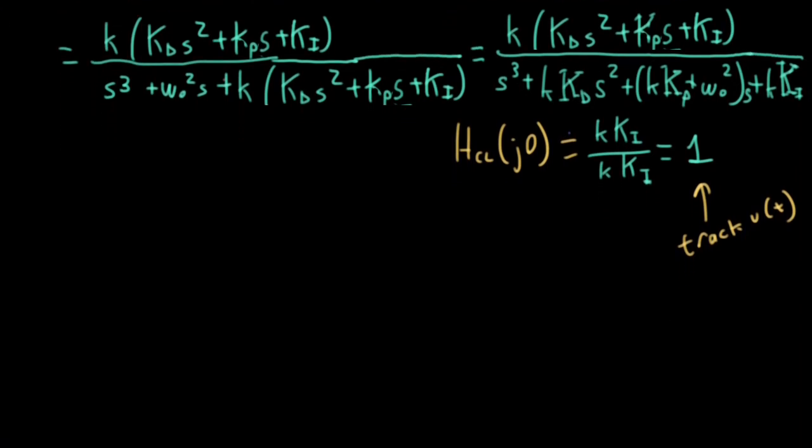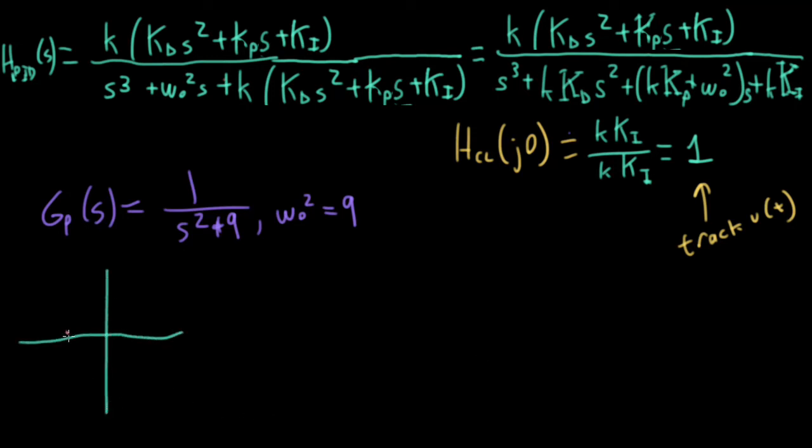Let's do a particular example of pole placement. Here, I'm going to change notation a little bit and write the transfer function as big H, pi, d, s. And the reason I'm doing that is we'll look at some subcases of this where we will look at pi, p, d, and p controllers by setting some of the terms here equal to zero. Anyway, suppose that the original plant function was one over s squared plus nine. So in that case, omega naught squared is equal to nine. And suppose I wanted to place the poles so that one of them was at minus 10 and the other two were at minus four along the real axis here. Okay, then what I would want to do is I would want to take my denominator and match it up with s plus four squared times s plus 10.